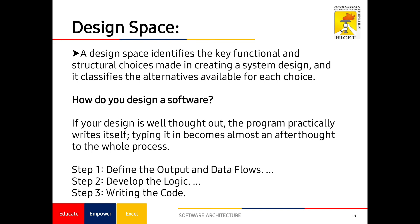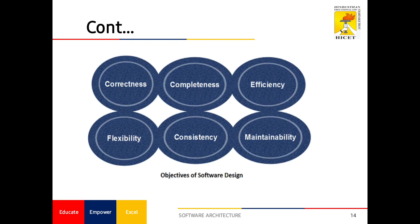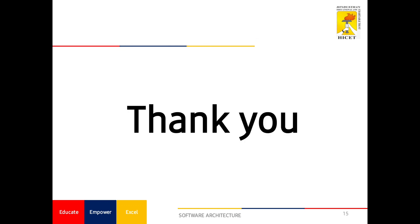There are three steps for the design phase: first, define the output and all data flows inside the architecture; second, develop the logic; and third, write the code — continuing through the design space in terms of correctness, completeness, and efficiency, with the help of flexibility, consistency, and maintainability. Thank you for watching this video.